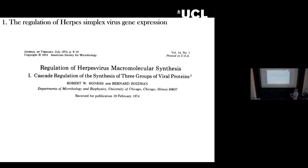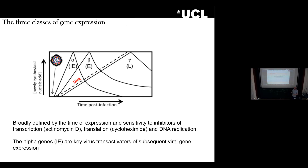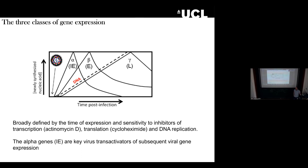This is all based on work by Bernard Roizman and Bob Honess back in 1974, who showed this for herpes simplex virus originally. The virus will come in and express a subset of immediate early genes that take over the cell — taking over the cell cycle, getting the cell ready for replication, and taking over the innate immune system. Then you have early genes, which drive the DNA replication machinery — the beta genes. That's how the virus replicates its own genomes. Then the gamma genes are basically the structural components of new viruses: capsid proteins, tegument proteins, glycoproteins.